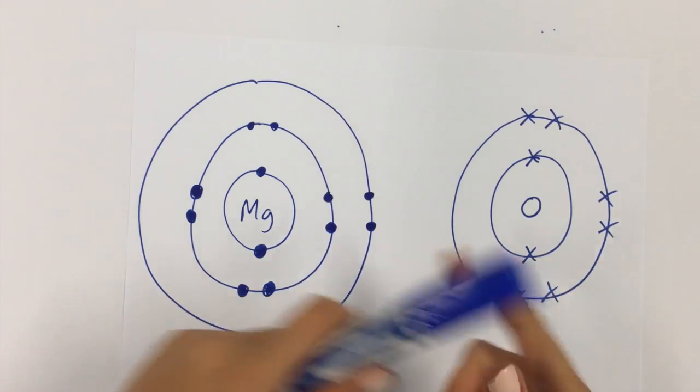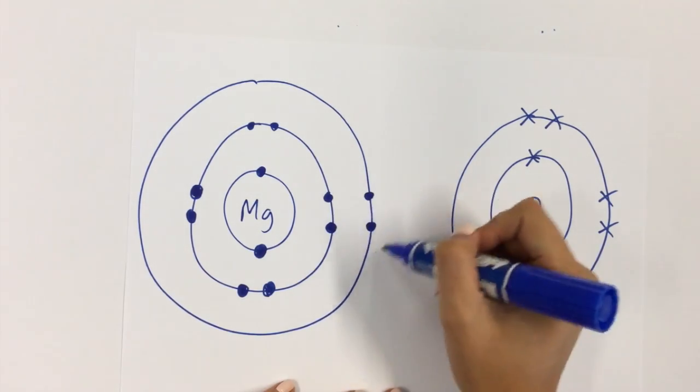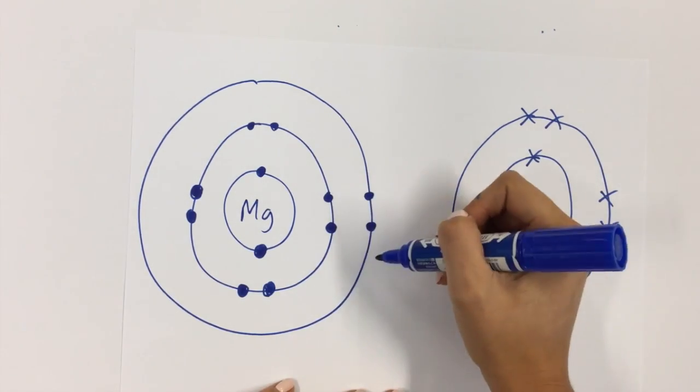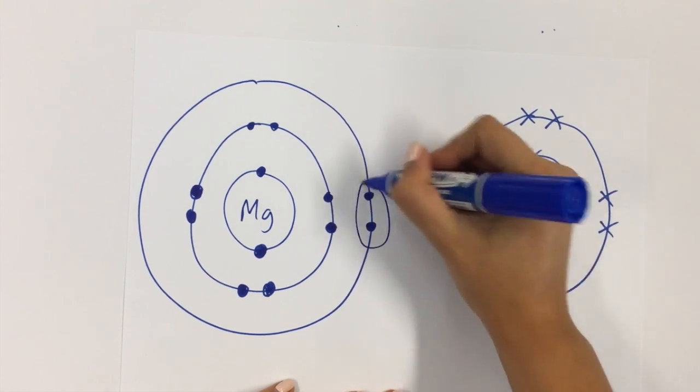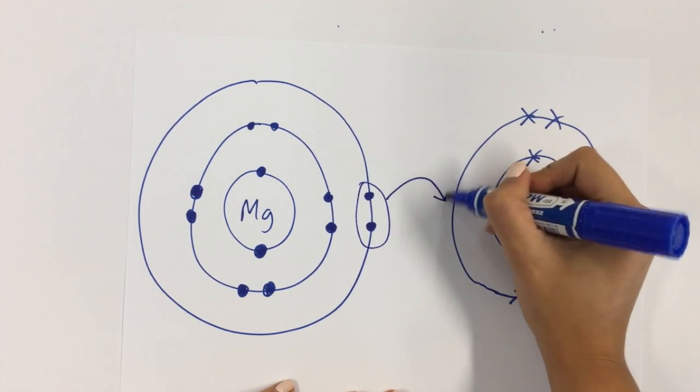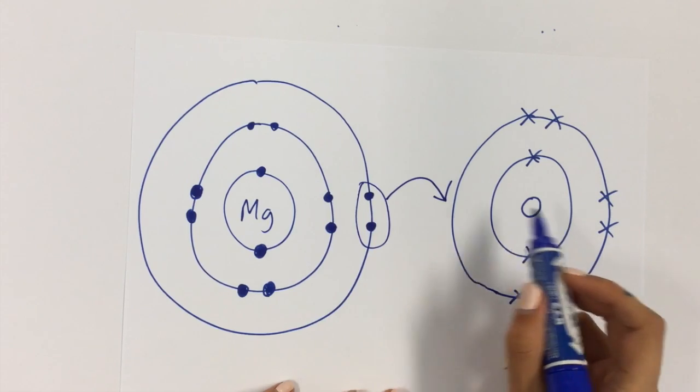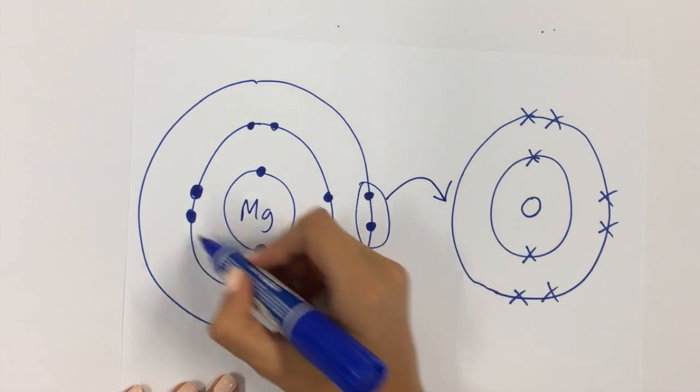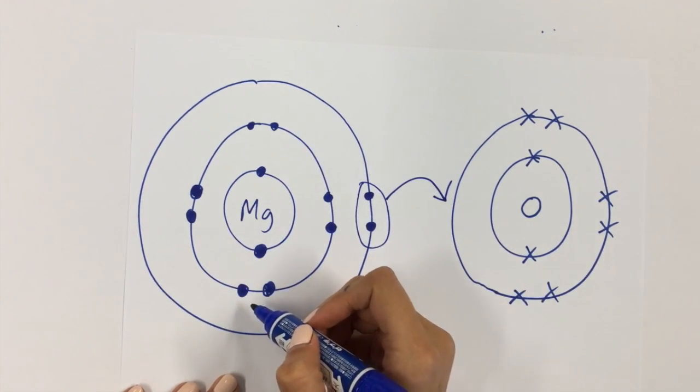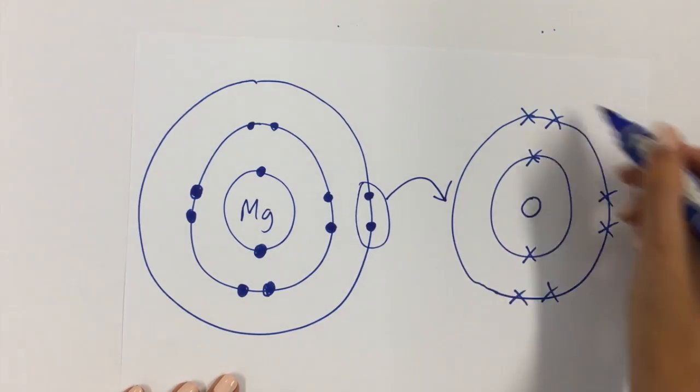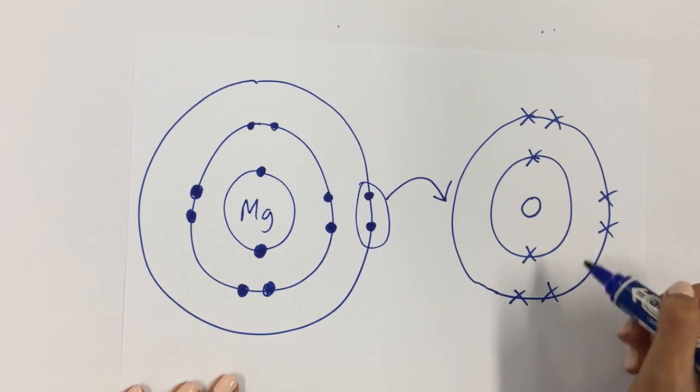The only way that I can solve the problem is by moving both of these electrons in the outer shell of magnesium, both of them into the outer shell of the oxygen. These electrons come across here, leaving 8 on my magnesium, and then a total of 8 on the outer shell of my oxygen.